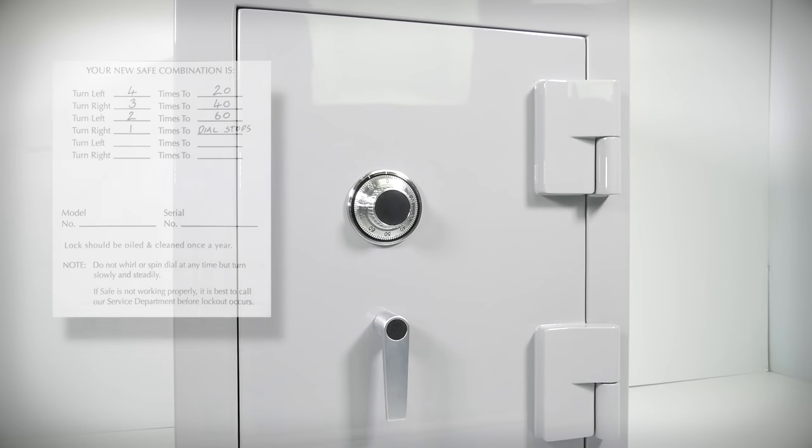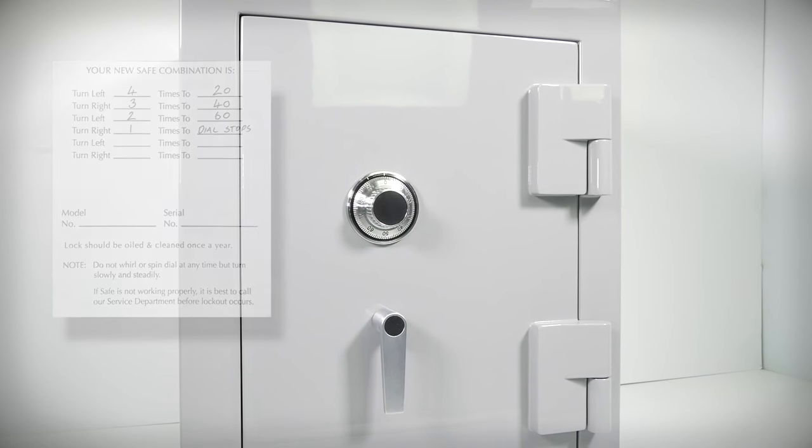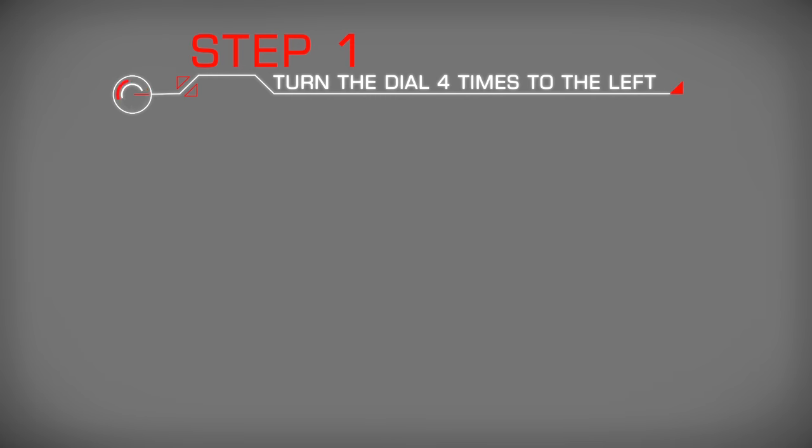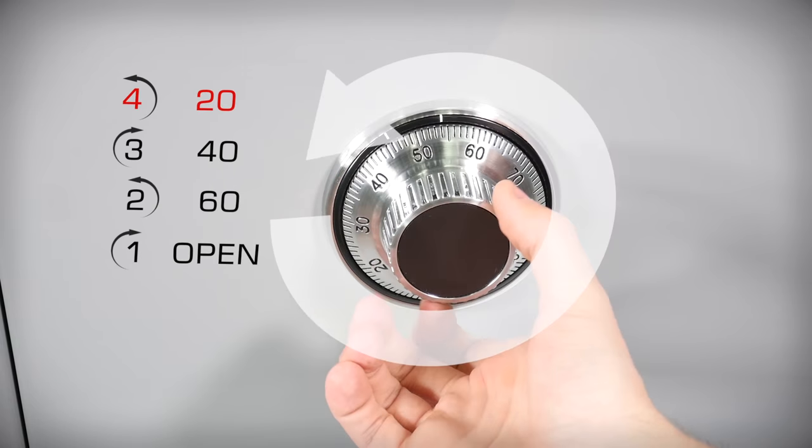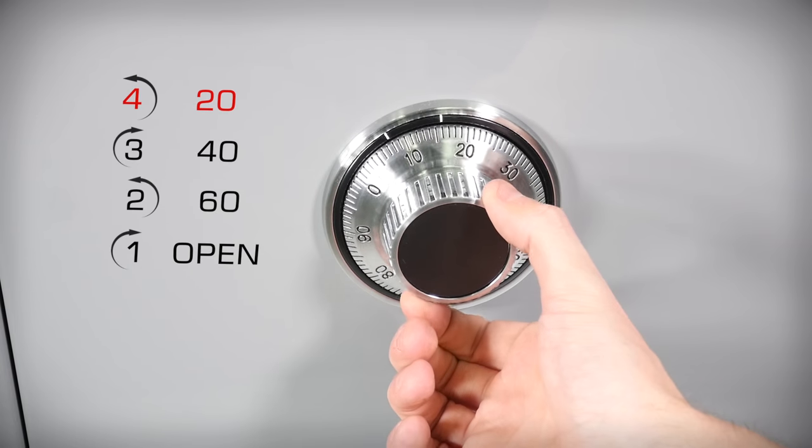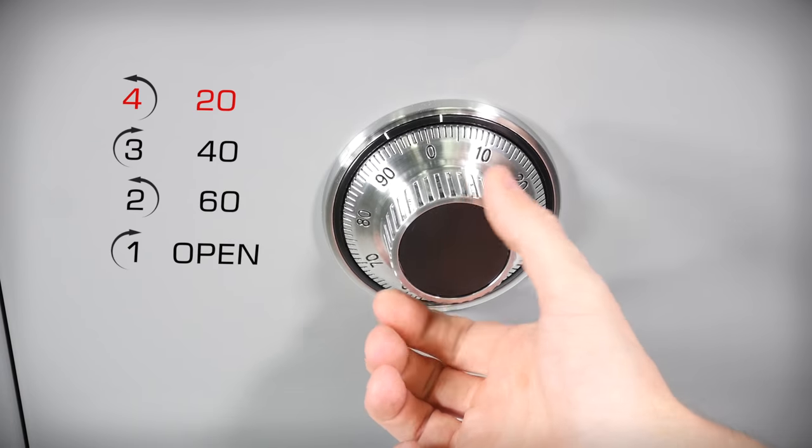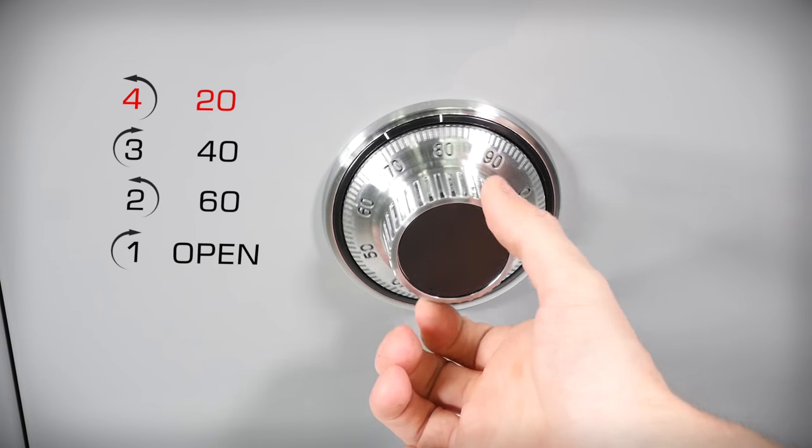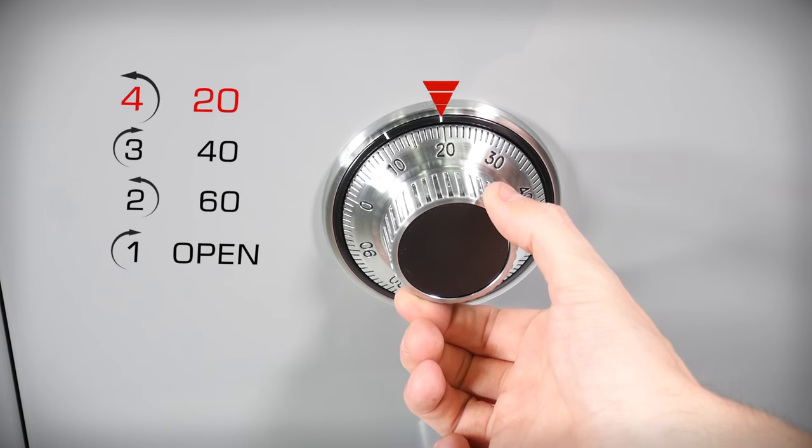Start off by having your combination in hand. You're going to start off by turning the dial to the left, counter-clockwise, passing the first number in the combination three times, then stop exactly on the number the fourth time.